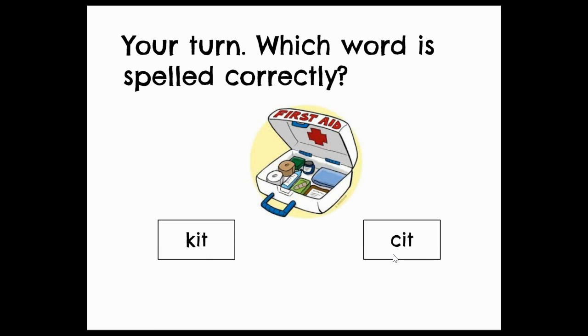Next picture. Here we go. This is a first aid kit. Kit. Which way is the correct way to spell kit? K-I-T or C-I-T? Think about the cat kite rule.